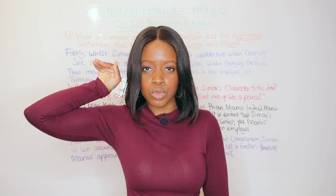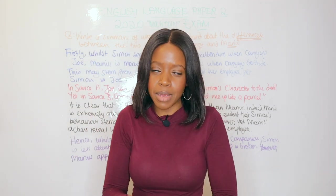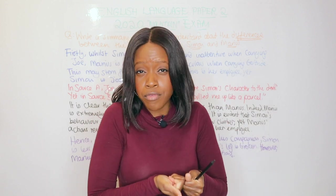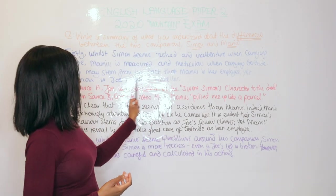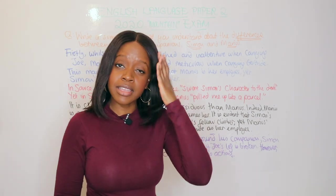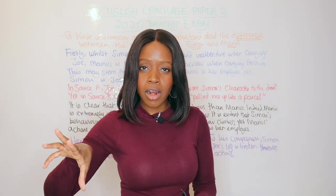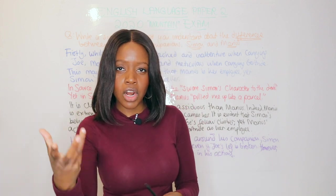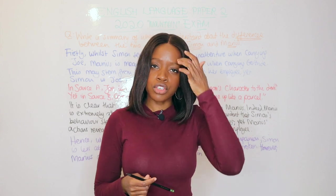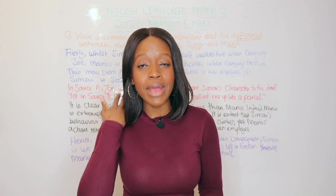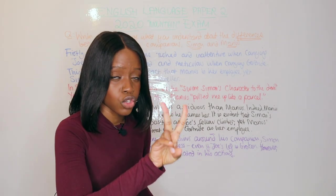Simon is careless and a bit sloppy when carrying Joe down, versus Marius who is very careful and attentive when helping Gertrude down the mountain. The second sentence states this could stem from the fact that one of them is an employee — Marius — while the other, Simon, is just a fellow climber. Simon doesn't need to worry about looking after his boss, whereas Marius has been hired by Gertrude, so he has to be careful when handling her. That's the opening point.